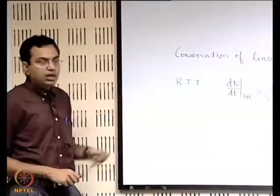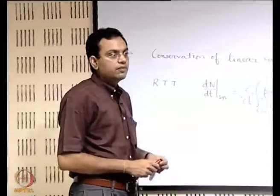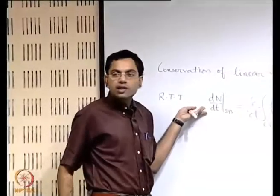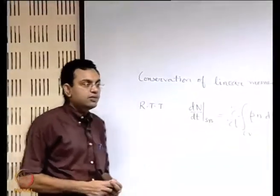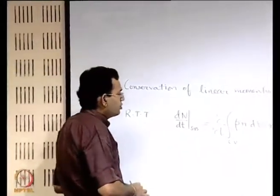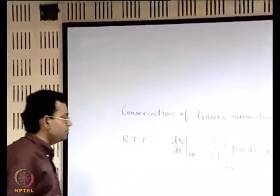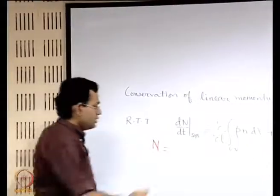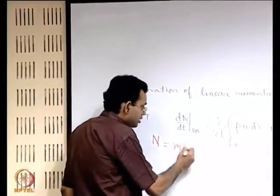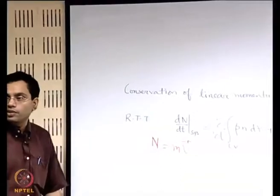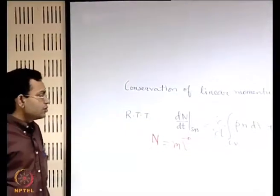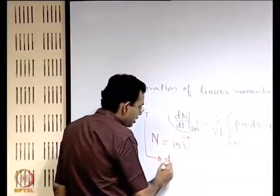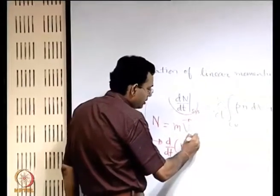In this lecture, we will look into the integral form of the conservation of linear momentum. To do that, we will start with the Reynolds transport theorem general expression which is valid for any conservation. Now if we want to conserve the linear momentum, then what should be N? N is the mass times the velocity, that is the linear momentum. So we can write the left hand side as d/dt of mv of the system.